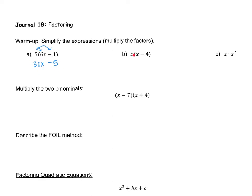This next one is interesting because there's an x in front and an x inside. When you multiply x times x you get x squared, and x times negative 4 is negative 4x. Now looking at these two terms, x squared is x to the second power and the other is x to the first power — there's technically a 1 there. Whenever the powers are different, you can't combine them. Even though they both have x's, they're not like terms, so we leave our answer like this.